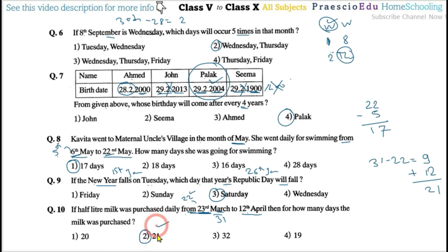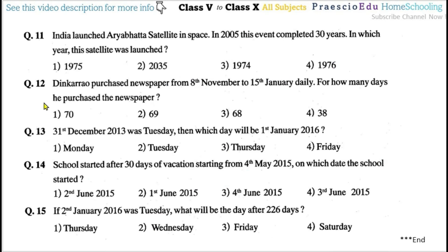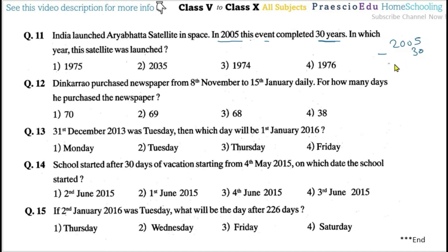Question number eleven: India launched the Aryabhatta satellite in space, and this event completed 30 years in 2005. In which year was the satellite launched? 2005 minus 30 equals 1975. So option number one is correct.